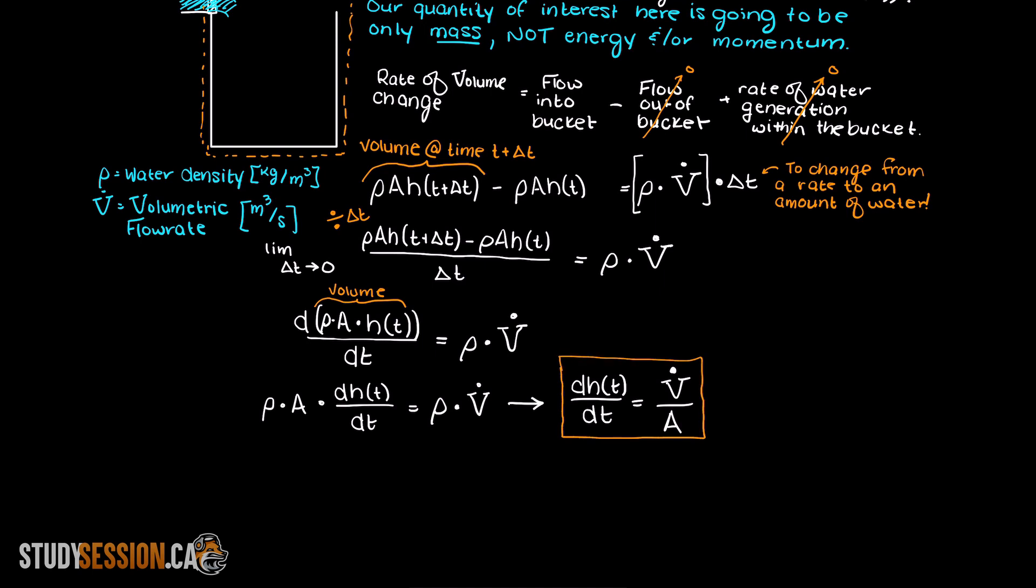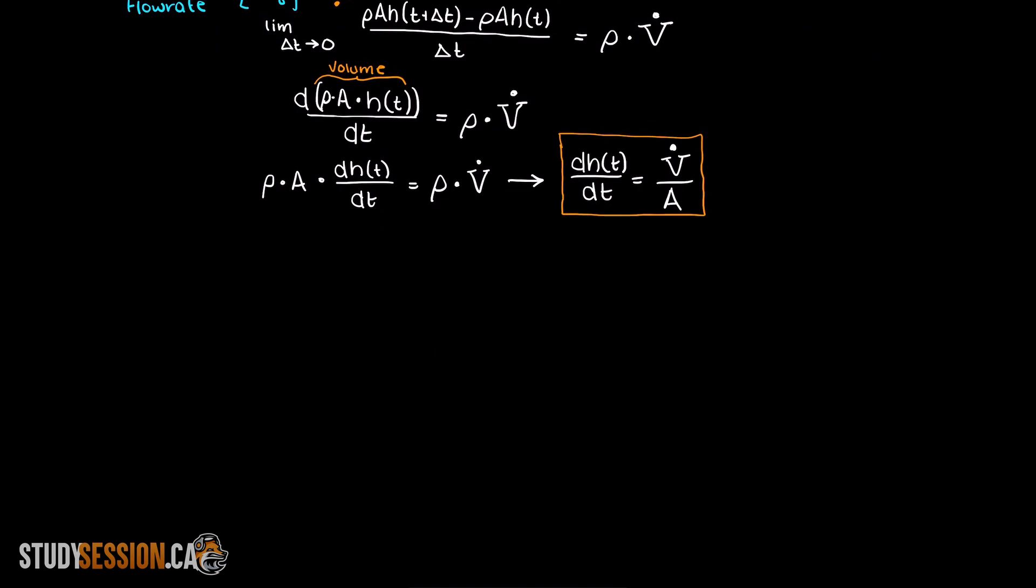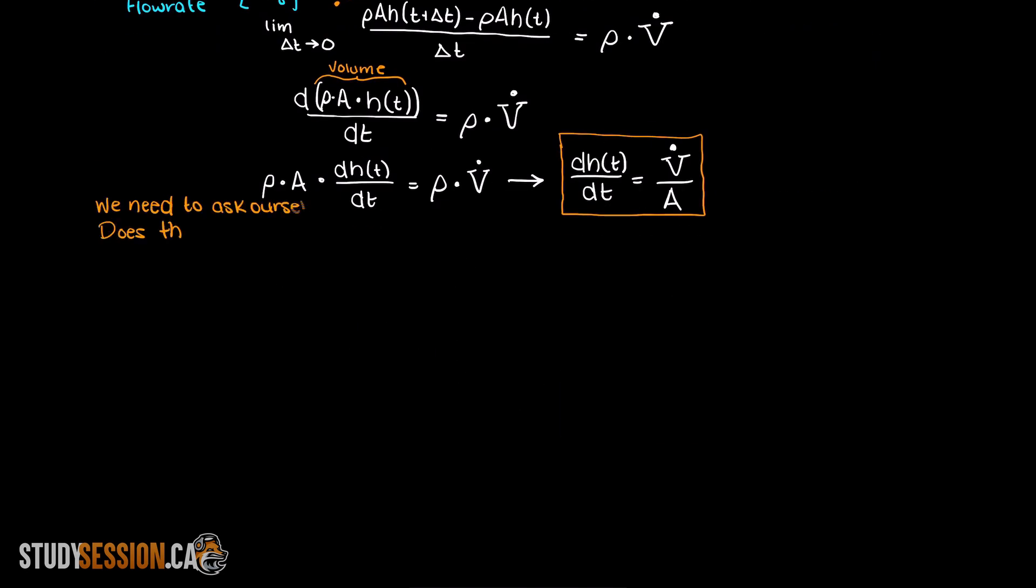So once we get the final answer like this, it makes sense that we should validate our answer, right? We could do this simply by assuming all but one variable in our equation are constants and then alter the other variable and seeing if it makes sense. Through this you can quickly understand if your newly found derivative actually makes sense.